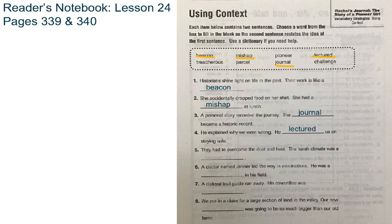I am going to now have you complete five, six, seven, and eight on your own. Use that first sentence, the context, the information to help you determine which word best fits. If you are struggling with the definition of pioneer, treacherous, parcel, or challenge, look those words up. Use your resources and tools to find the definitions. You can pause the video here and then click play again when you're ready to move to page 340.